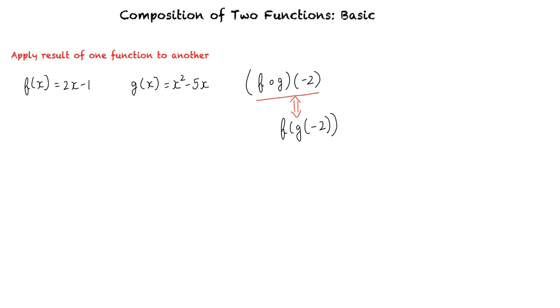The f(g(-2)) should be interpreted as f of g of -2. We first evaluate the function g(x) at x = -2 and then substitute this value in the f(x) function.